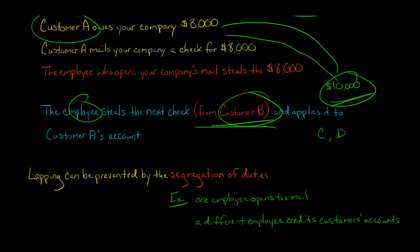And you can prevent lapping. One way is through segregation of duties. For example, if the person who opens the mail is the same person who records the cash receipts and applies it against the customer's accounts, if they have control over all those different functions, then it's easy for them to commit this lapping scheme.